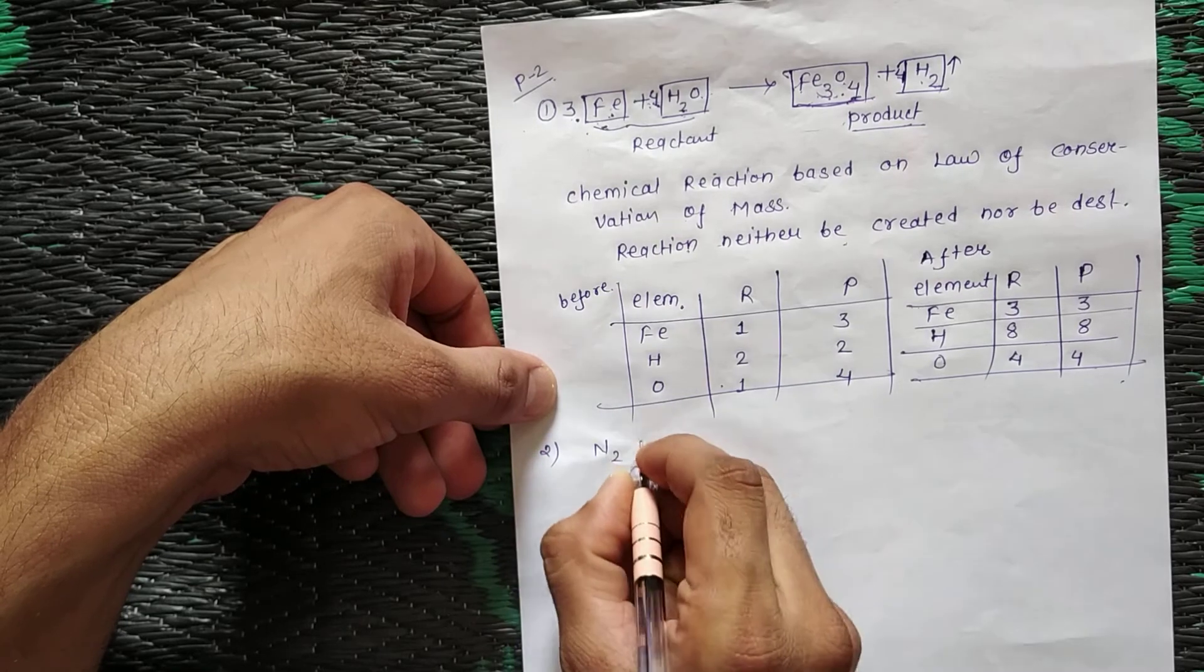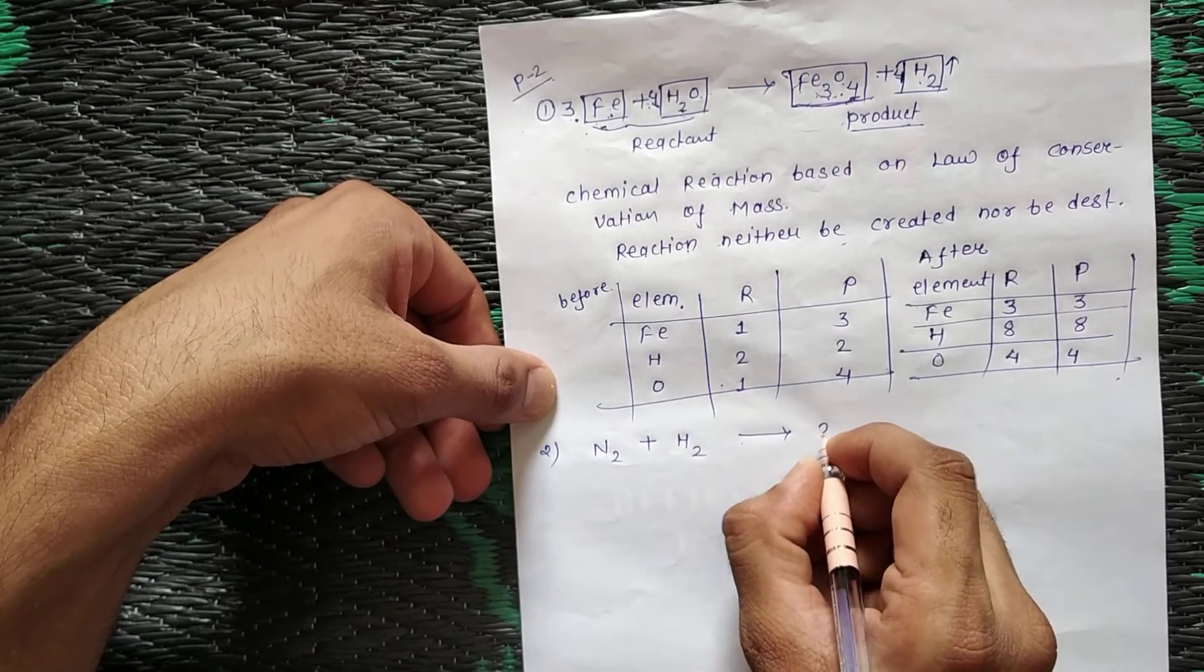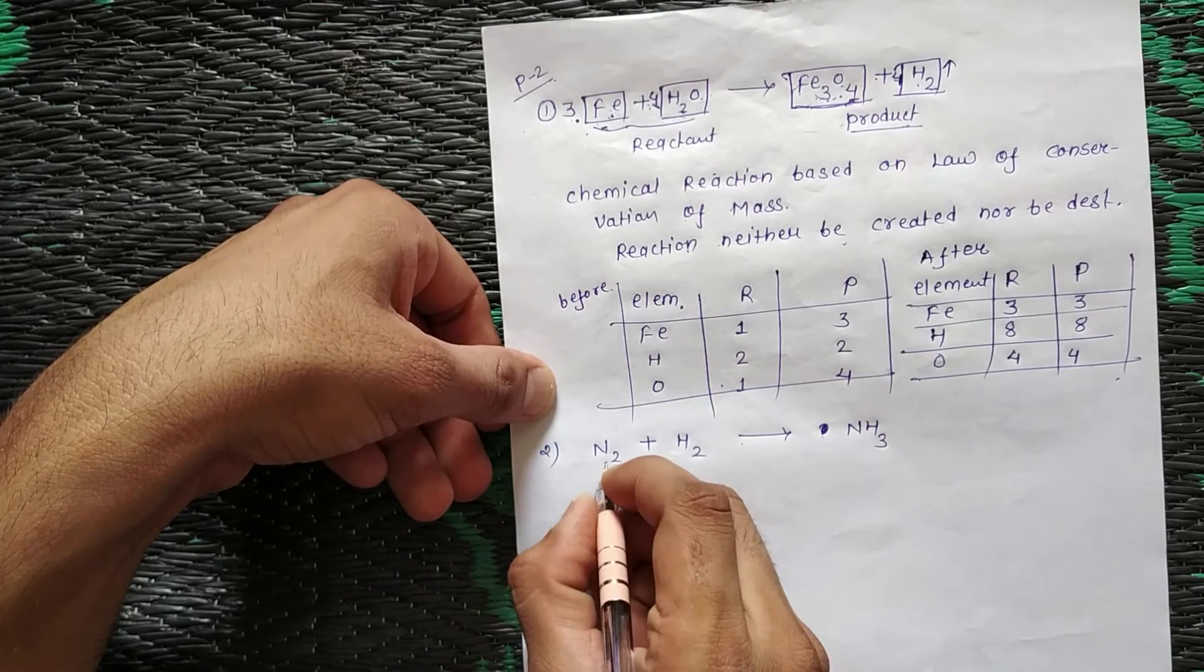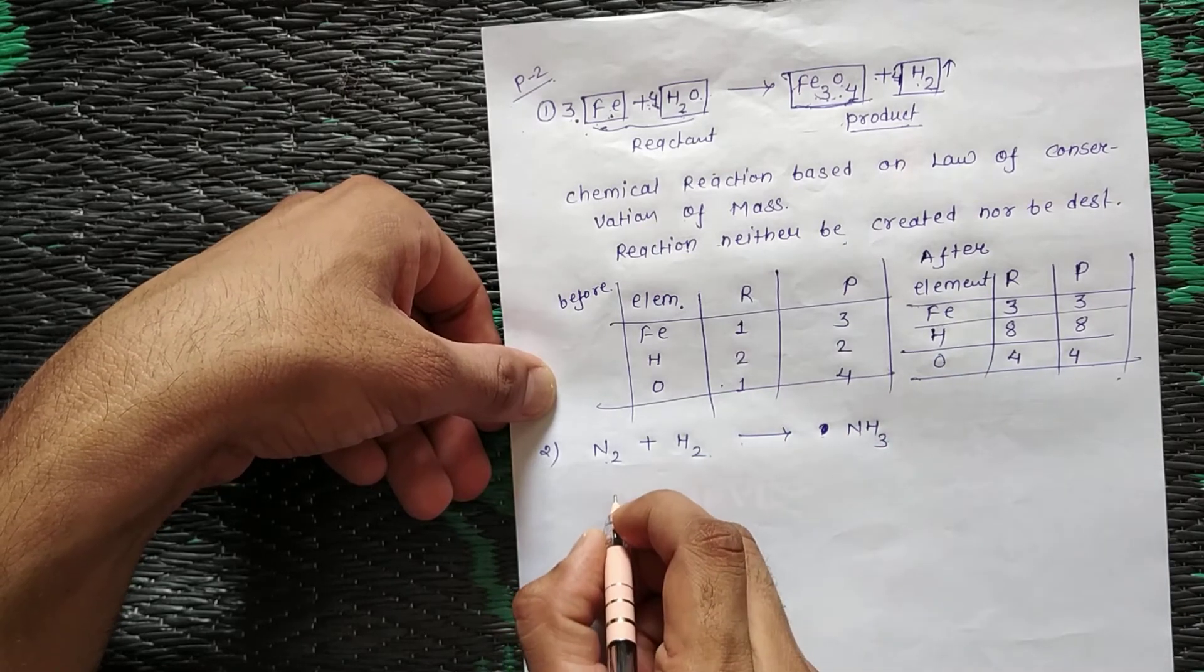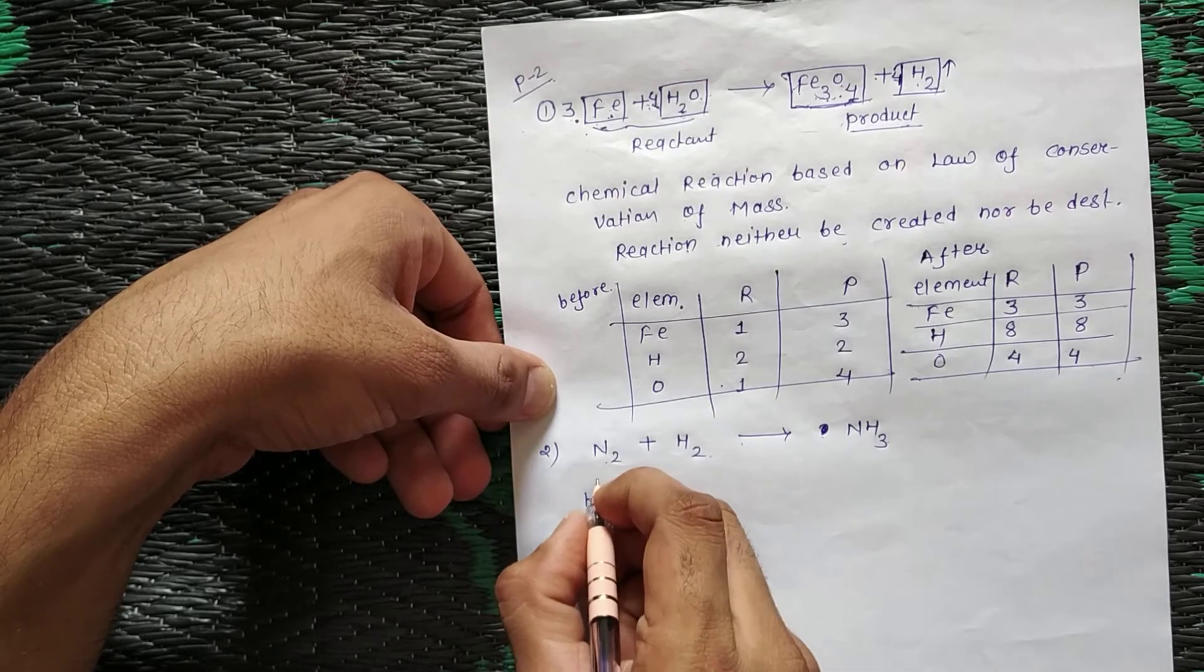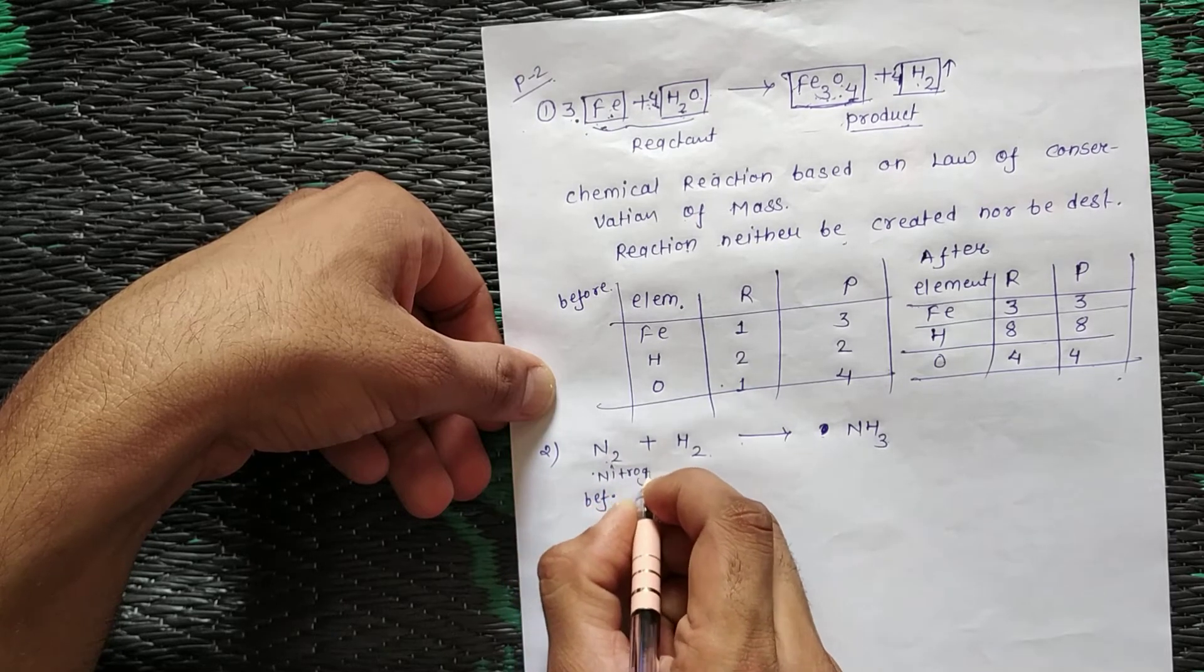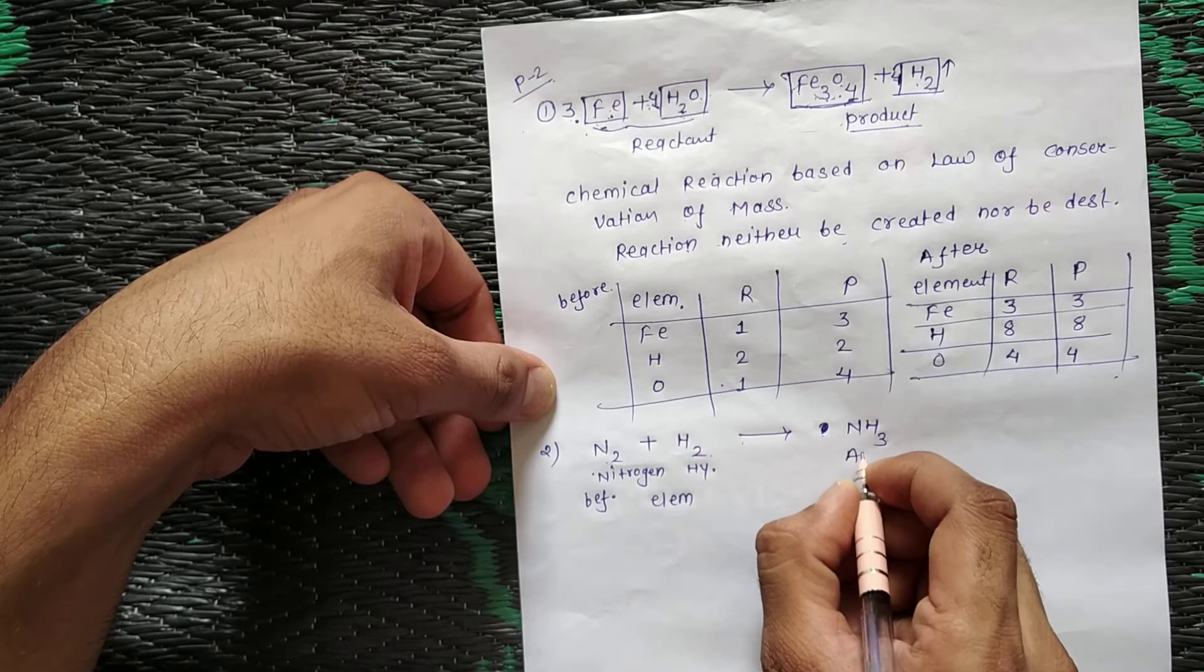N2 plus H2 react to each other and form ammonia. When N2 and H2 react together, ammonia formation occurs. Before balancing, we list the elements: nitrogen and hydrogen forming ammonia.